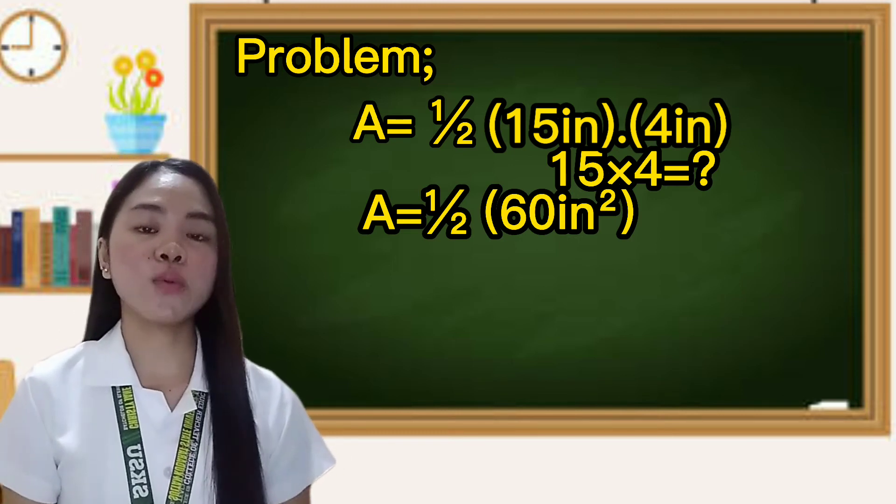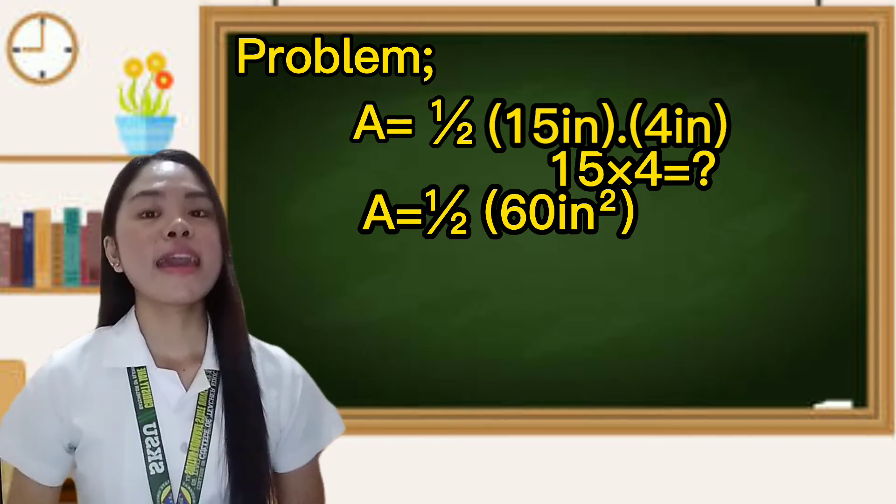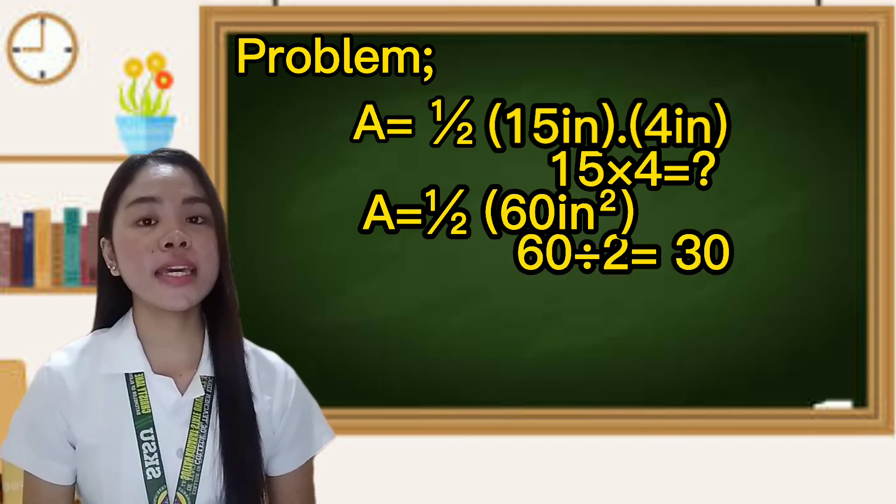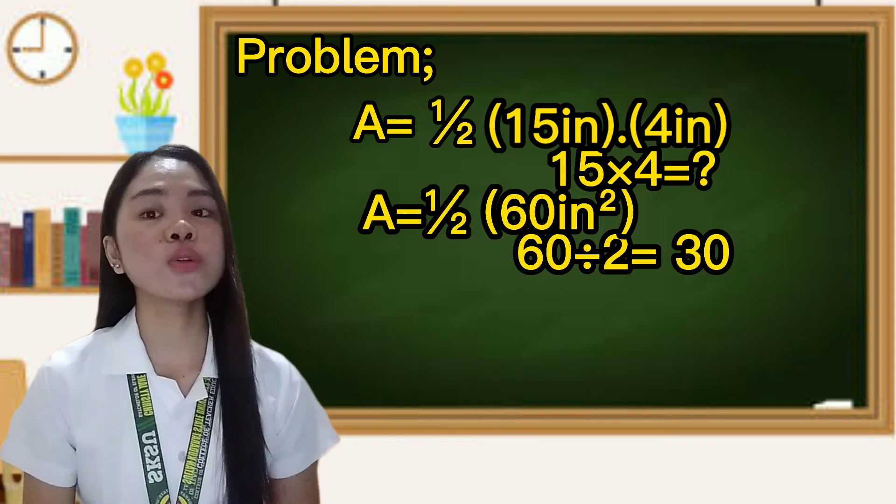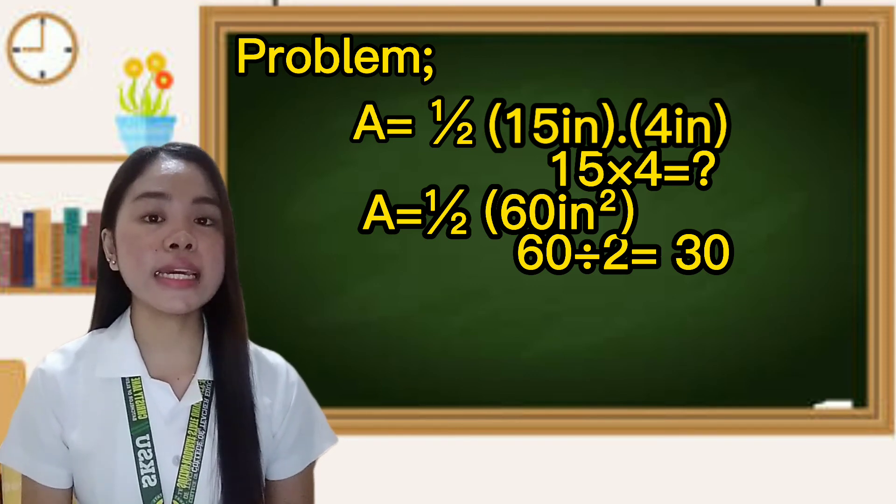So the answer is area equals one-half sixty inches squared. Next, we have to divide sixty inches squared by two. Sixty divided by two equals thirty inches squared.